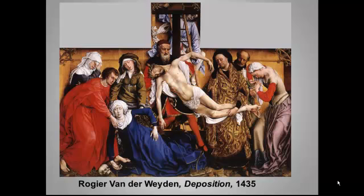By the term 'rhythmic,' art analysts mean that the artist employs repeating lines, shapes, and forms. Good term to be able to use in an essay. Note how the curved body of Christ is echoed by the fainting Mary, and how their arms and hands form parallel lines and parallel curves.